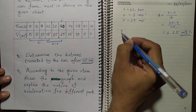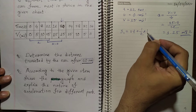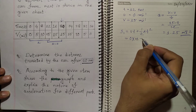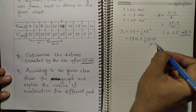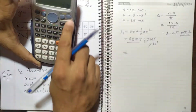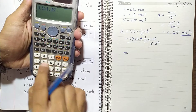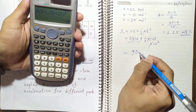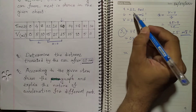Now we calculate s₁ using s = ut + ½at². That gives us 0 × 12 + ½ × 1.25 × 12², which simplifies to 0.5 × 1.25 × 144 = 90 meters. So the distance traveled by the car in the first 12 seconds is 90 meters.